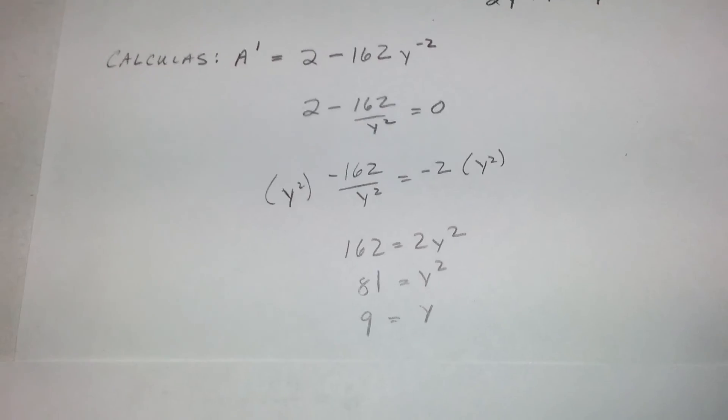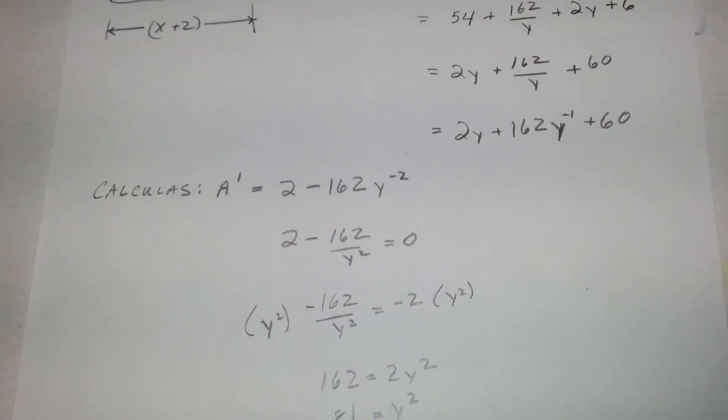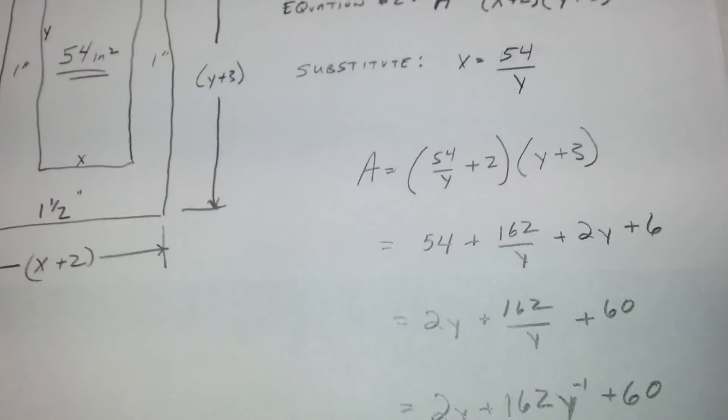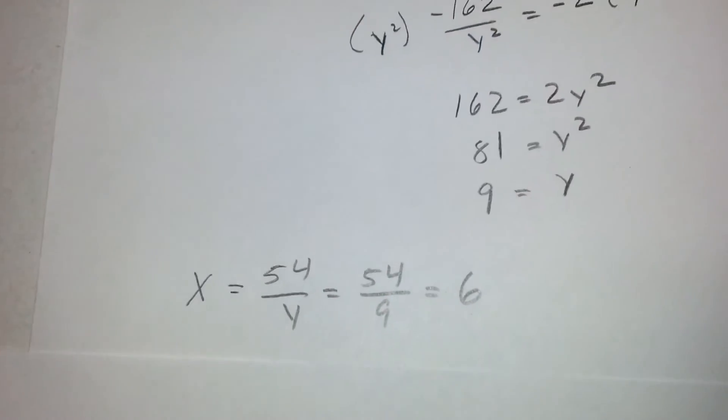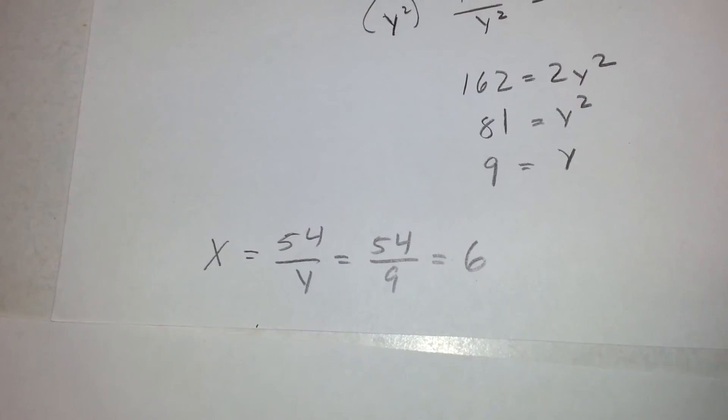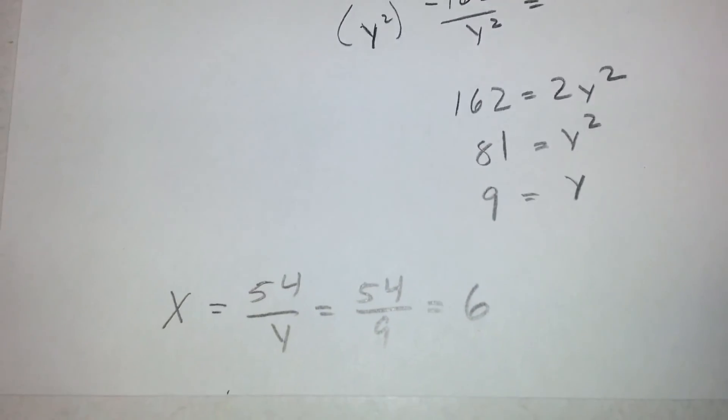Now we will take that y equals nine inches and we will plug that back into our first substitution to solve for x which was 54 over y. Plug our y back in be 54 over nine.